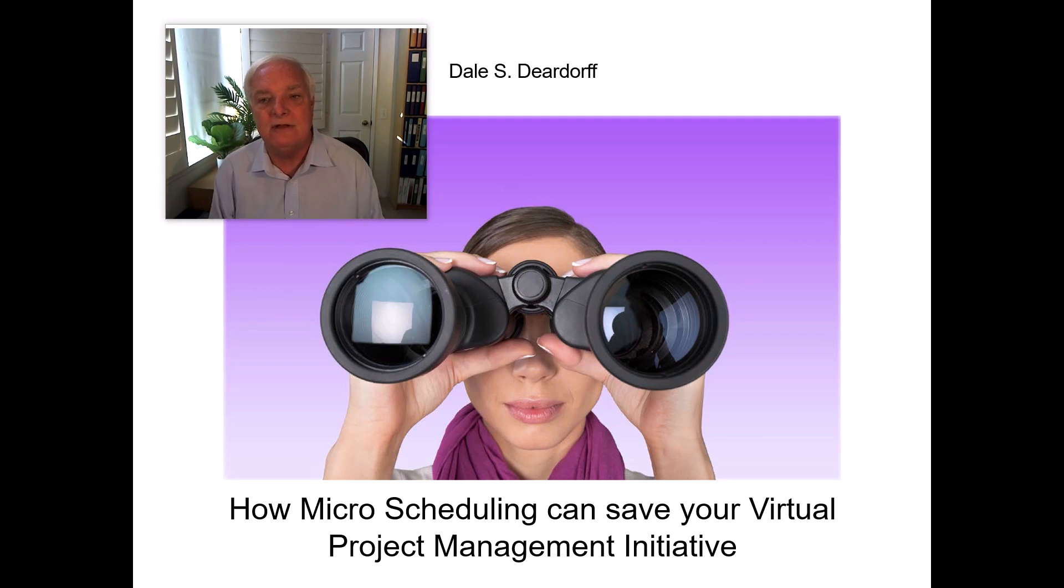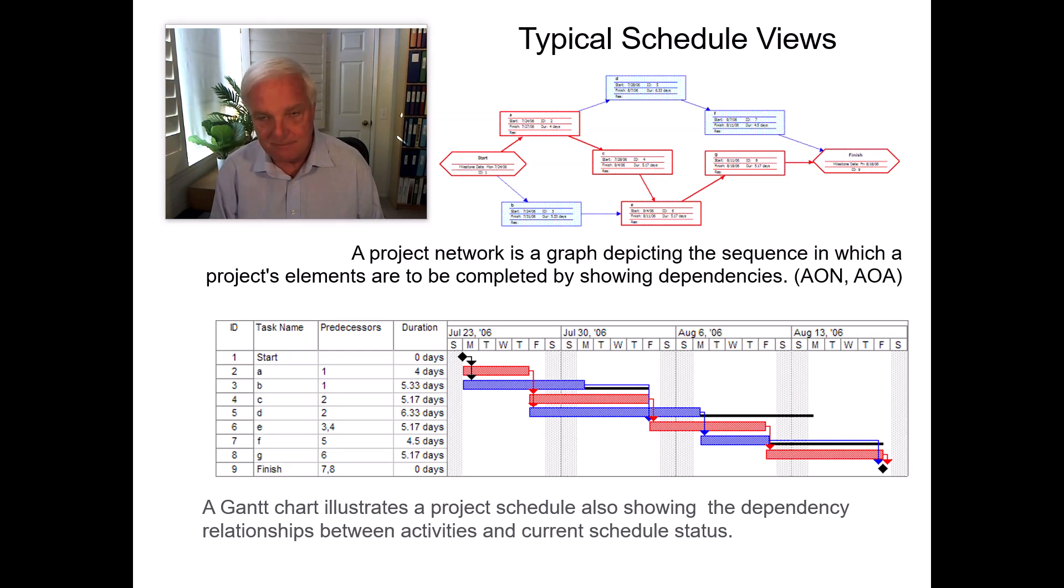In project management, we have many different scheduling views we can use. Let's take a peek at a couple of them. So let's start with the Gantt chart, and that's that view that you've got at the bottom of the screen. That Gantt chart gives you the opportunity to look at a project, seeing the elements, the milestones with predecessor and successor logic.